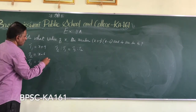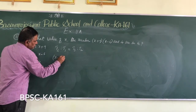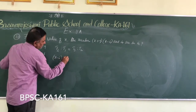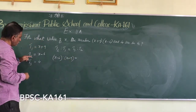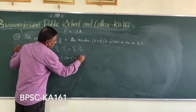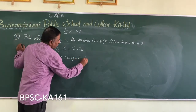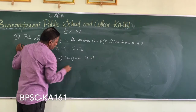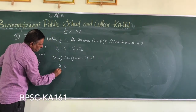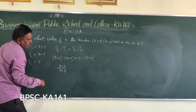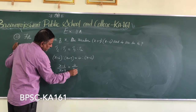The second term is X minus 6, the first term is X plus 9, and the third term is 4. So we write: X minus 6 divided by X plus 9 is equal to 4 divided by X minus 6.